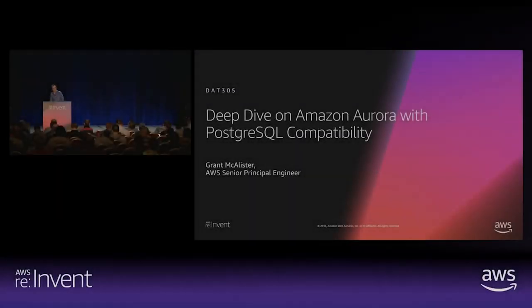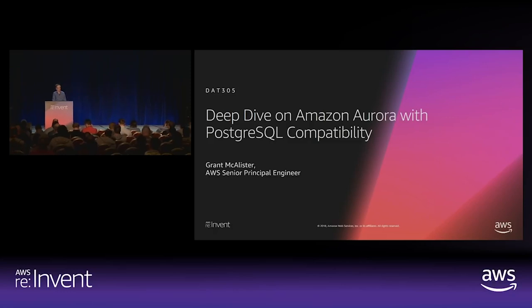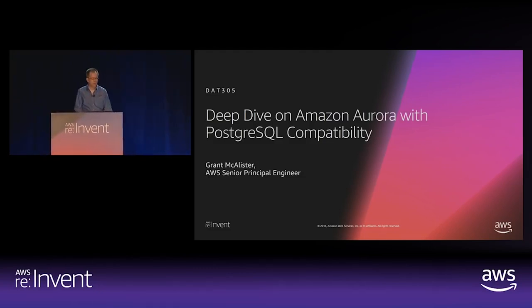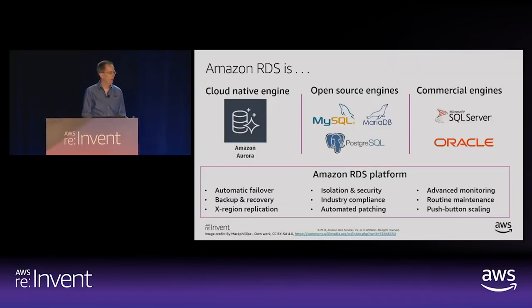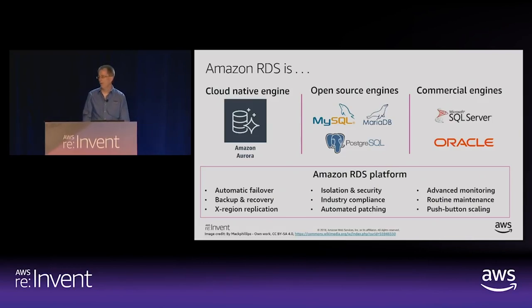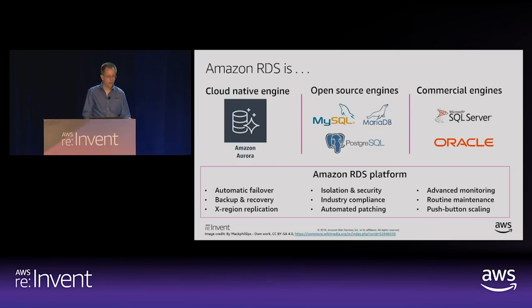Good evening, everyone. My name is Grant McAllister, I'm a Senior Principal Engineer at AWS working on RDS, mostly with the Postgres engines. Today we're going to dive into Aurora Postgres — the changes we've made, why we made them, and why you might care. One important clarification: there's a lot of confusion that Aurora is not part of RDS, but it actually is. It just has separate branding. It runs under the same management platform as all seven of our engines.